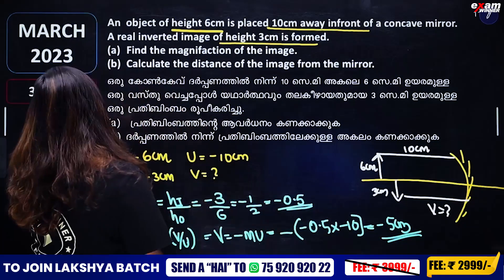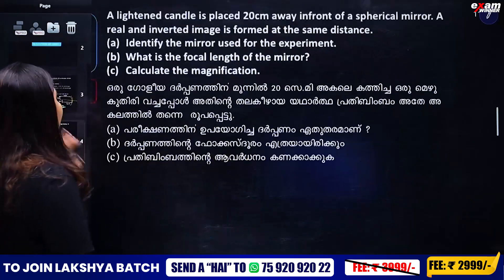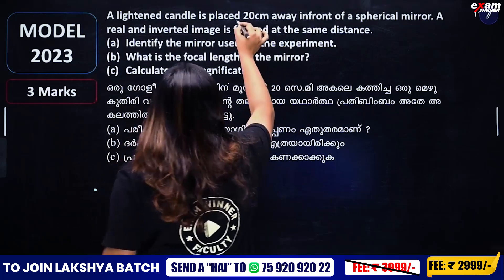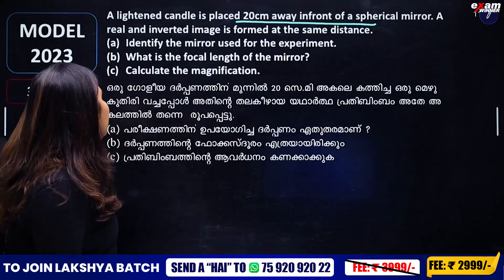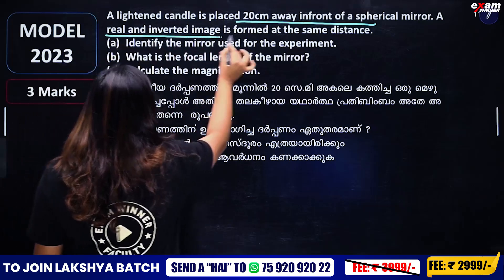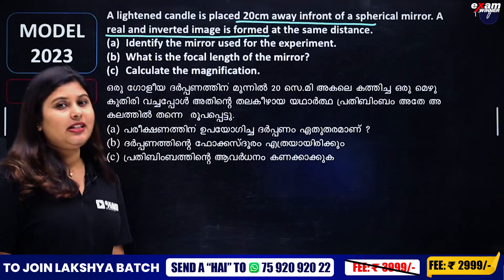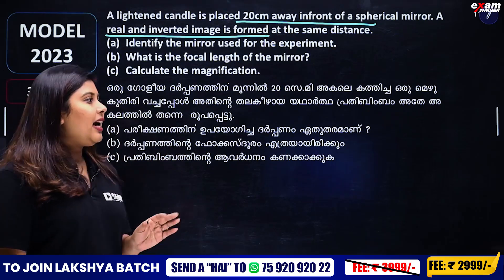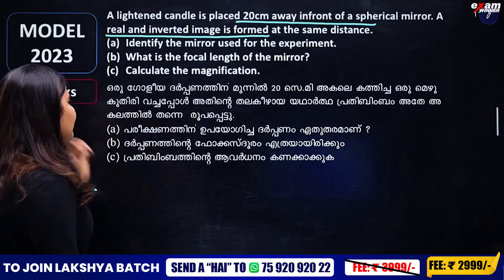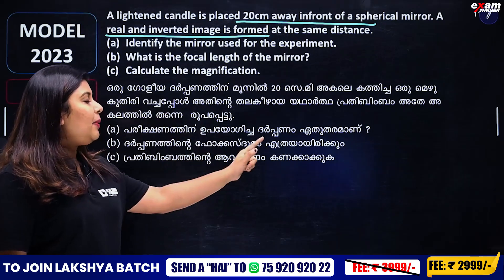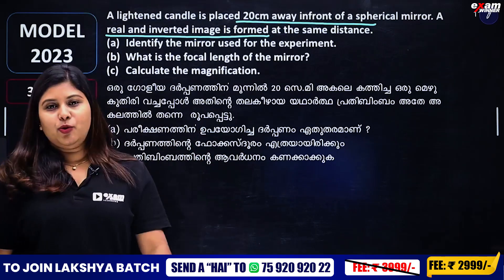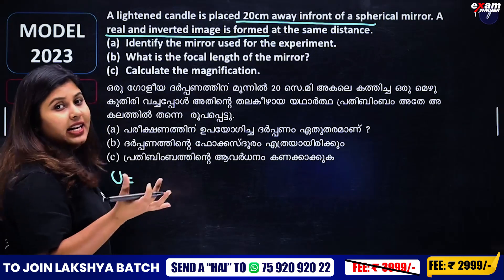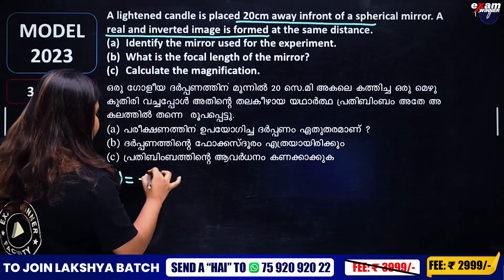In the next step, a lighted candle is placed 20 centimeter away in front of a spherical mirror. A real and inverted image is formed at the same distance. We can see the image on the front, so the image distance is minus 20 centimeter.